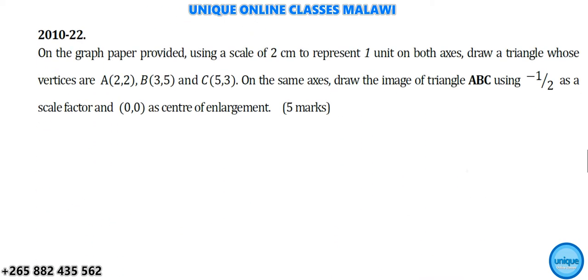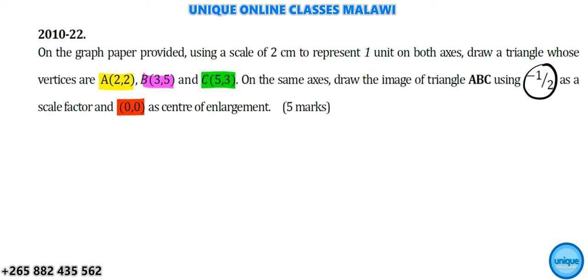On the graph paper provided, using a scale of two centimeters to one unit on both axes, draw a triangle whose vertices are A(2,2), B(3,5) and C(5,3). On the same axes, draw the image of triangle ABC using negative half as a scale factor and (0,0) as the center of enlargement. This question is about enlargement and was worth 5 marks — question number 22 from 2010.